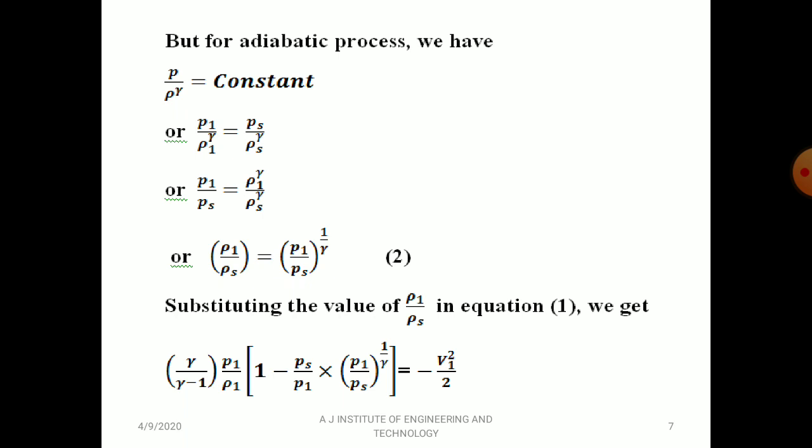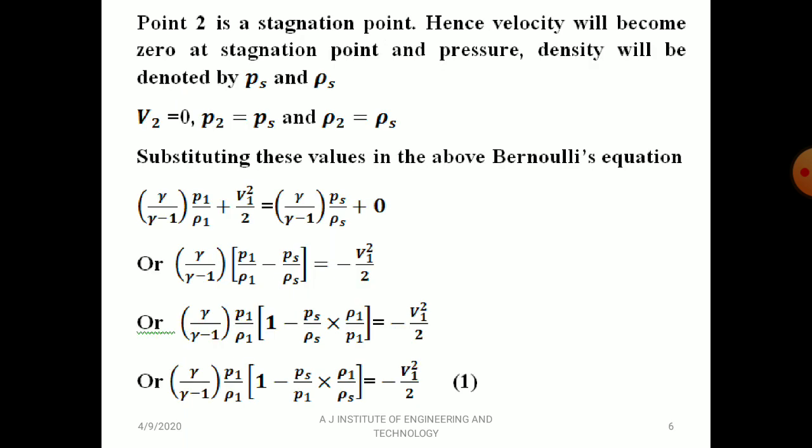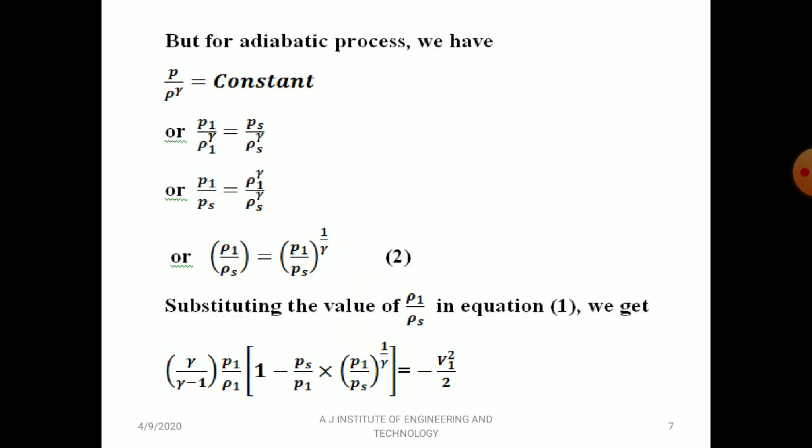Substituting the value of ρ1/ρs = (P1/Ps)^(1/γ) into equation 1: γ/(γ−1) · P1/ρ1 · [1 − (Ps/P1)·(P1/Ps)^(1/γ)] = −V1²/2. Simplifying: γ/(γ−1) · P1/ρ1 · [1 − (Ps/P1)^(1 − 1/γ)] = −V1²/2.